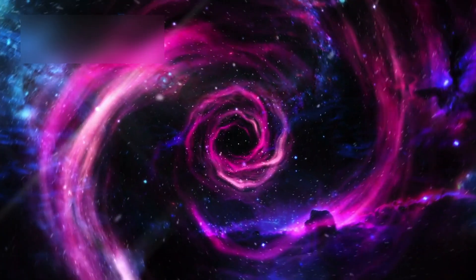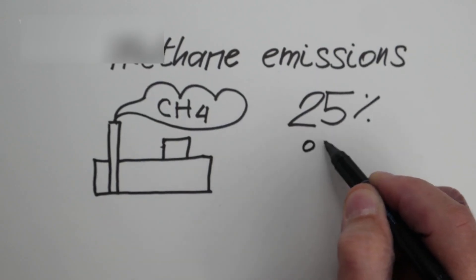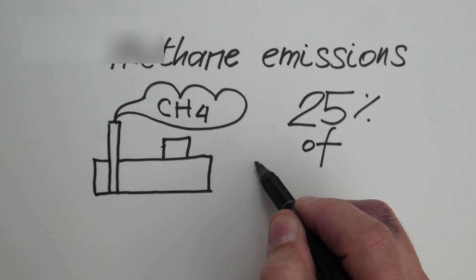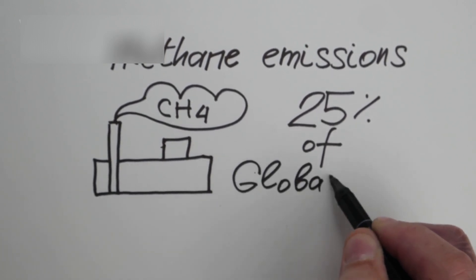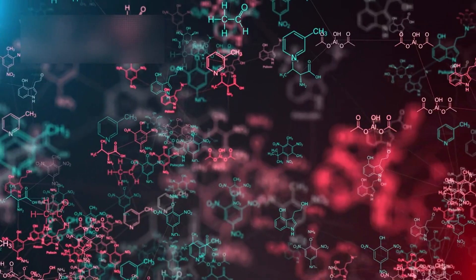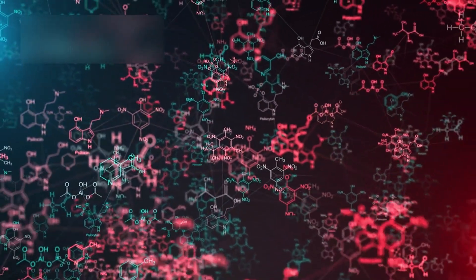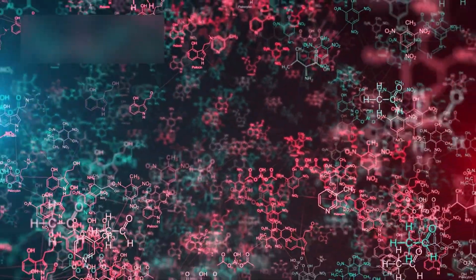Signs of life? Water alone is not proof of life. Scientists also examine atmospheric chemistry for potential biosignatures. Using advanced spectroscopic techniques, JWST detected methane and carbon dioxide, both naturally occurring on Earth and other planets. But the most intriguing discovery was a molecule rarely found outside biological processes: dimethyl sulfide, or DMS.